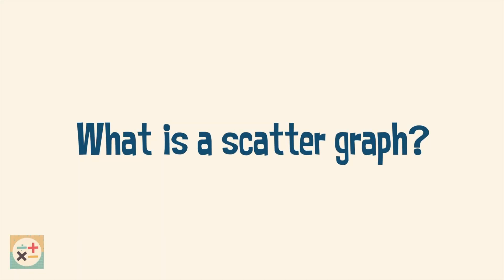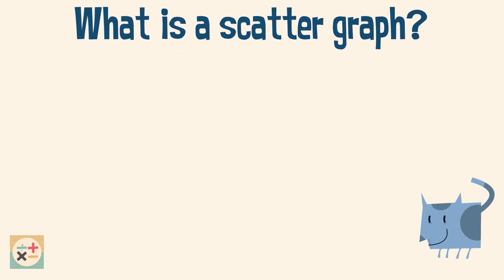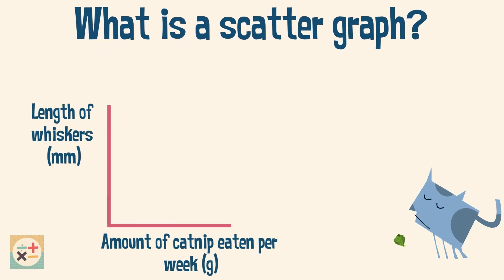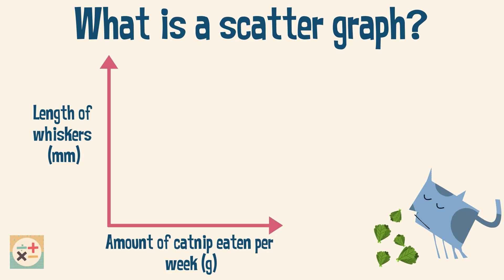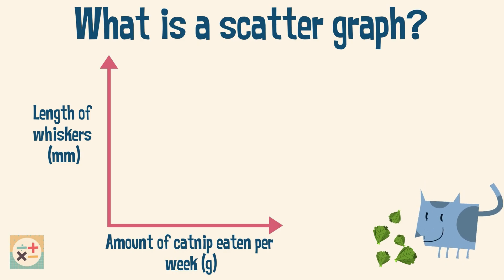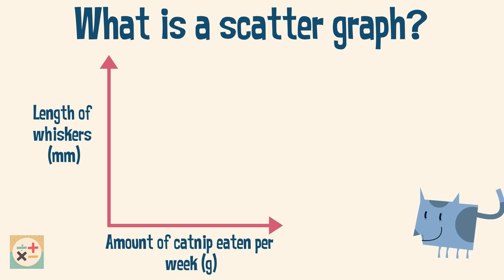A scatter graph or scatter plot can show you the relationship between two sets of data. For example, it can show you if there is a relationship between the amount of catnip a cat eats and the length of its whiskers.